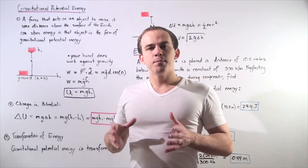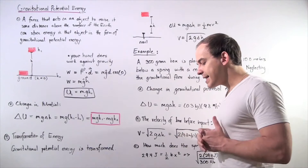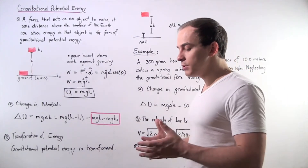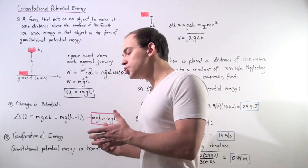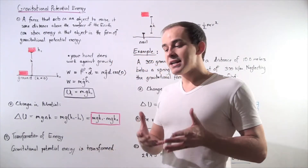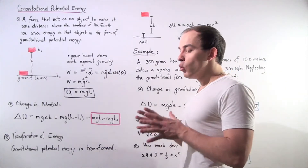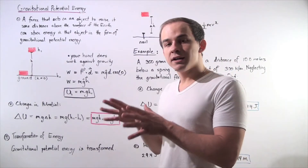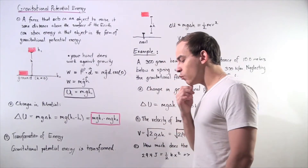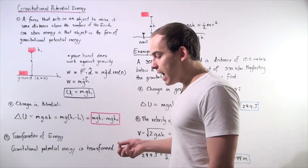In an earlier lecture, we spoke about one form of energy known as kinetic energy. Kinetic energy of an object is simply the energy of the motion of that object. If an object has a certain mass m and a certain velocity v, we can find its kinetic energy by using the formula one-half times mass times velocity squared.